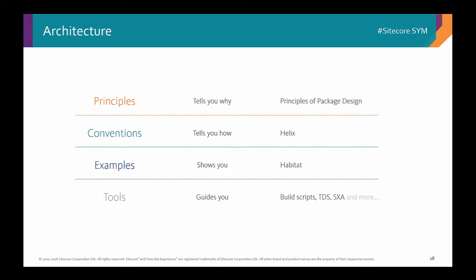Architecture has four cornerstones we're going to talk about: principles — the 'why' of the architecture, why do we even bother and why did we choose this architecture; conventions — how do you apply those principles to the code and solution you're building; and then examples and tools to help us with those conventions, because when you press one button and it just does what the convention does, it's a lot easier than when you have a tool that works against the conventions.